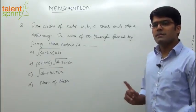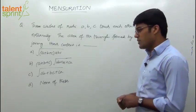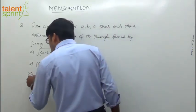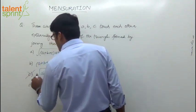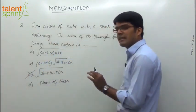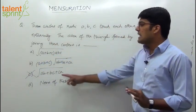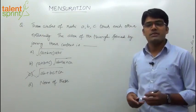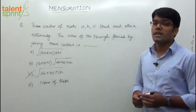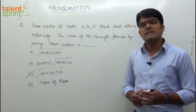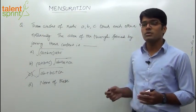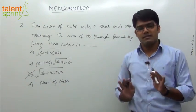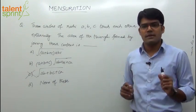Before we actually look at the solution, let me tell you something very important. The answer cannot be option C. Without doing any calculation, you must be able to figure out that the answer cannot be option C, which is square root of AB plus BC plus CA. How do we know this? Just go by the concept of units — units of measurement.